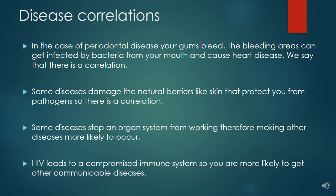So what does this have to do with correlation? Diseases can also have correlations to other diseases. In the case of periodontal disease, your gums bleed, and the bleeding areas can get infected by bacteria from your mouth, which can cause heart disease. We say there's a correlation between periodontal disease and heart disease. Periodontal disease — gums bleeding — doesn't cause heart disease, but it increases the probability of it, so there's a link, or a correlation.